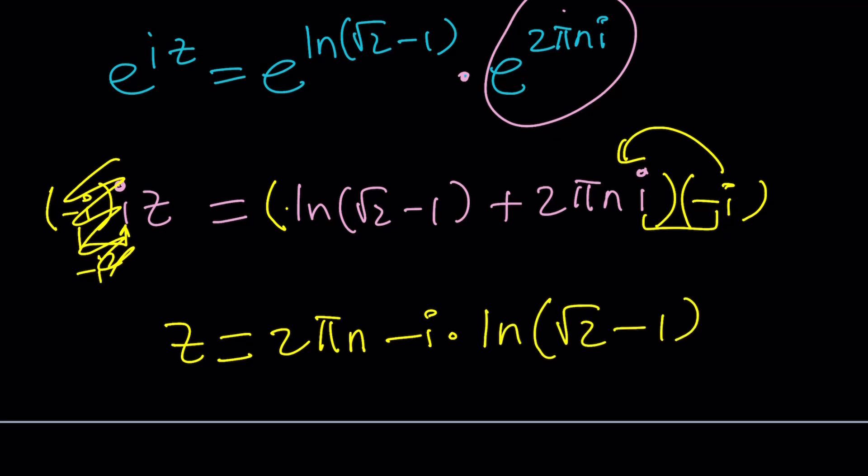So we can basically cancel these out, and we end up with z. And here, when we distribute, this is going to be negative i squared again, which is 1. So I can just write 2 pi n, but there's going to be a negative sign here, minus i times ln of root 2 minus 1. ln of root 2 minus 1 is real. So n is an integer. But this is one of the z values.